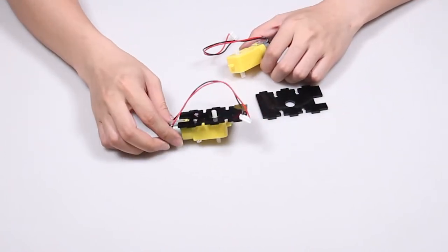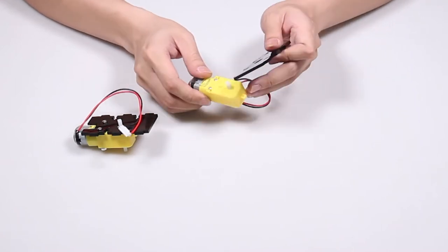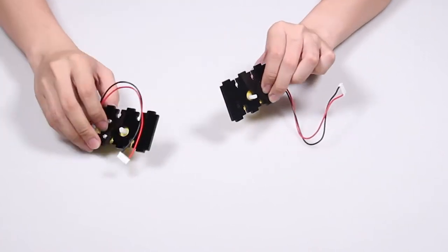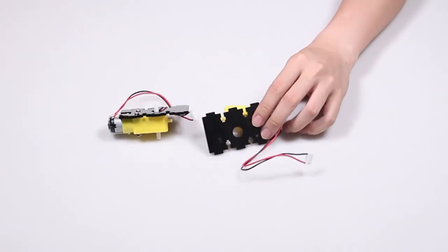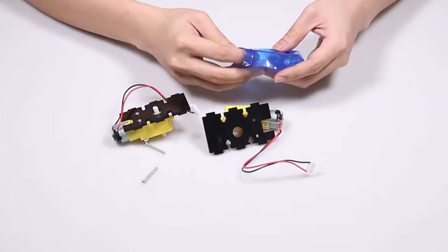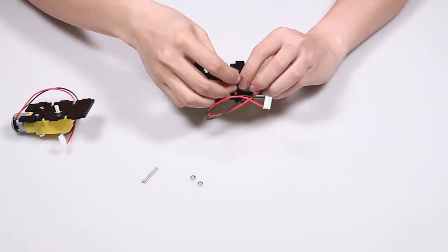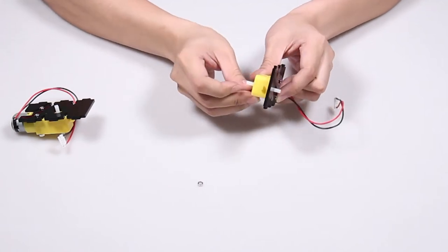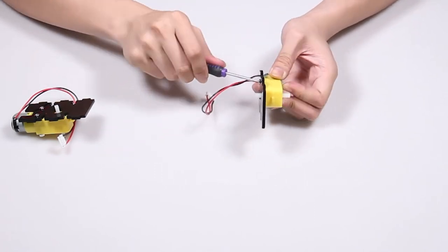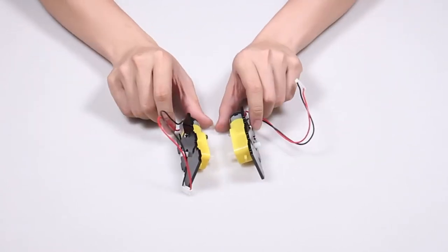Thread the screws like this and tighten them. When you finish, it should look like this. Do the same with the other motor. The label faces out and connects like this. It should be mirrored. Also take two long screws and two nuts.